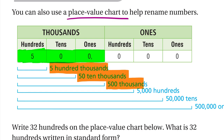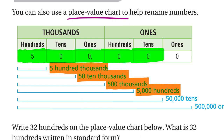If we take one more zero we're at hundreds, so it's 5,000 hundreds. Moving to the tens place, in green we have 50,000, so it's 50,000 tens. If we take one more digit we have the full 500,000 and we're at the ones place, so it's 500,000 ones.